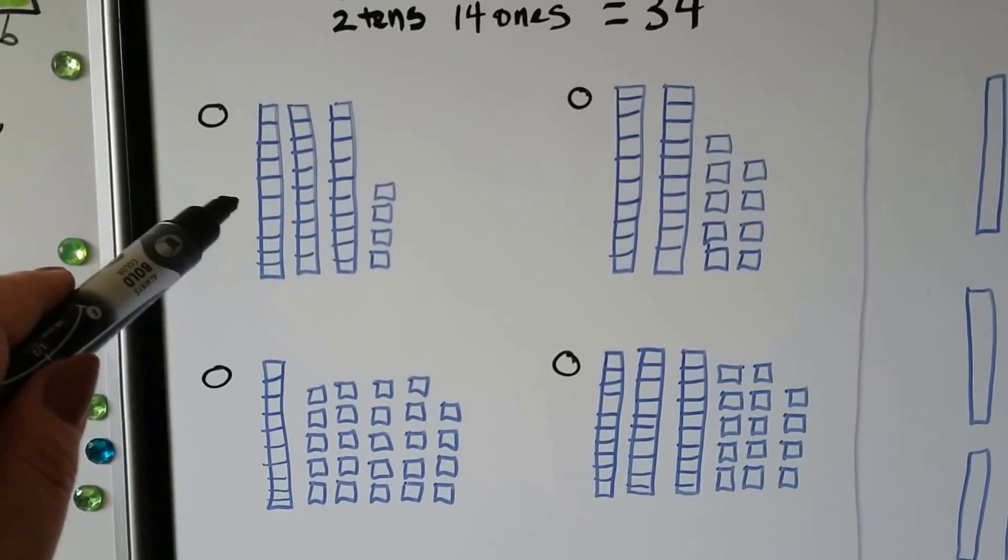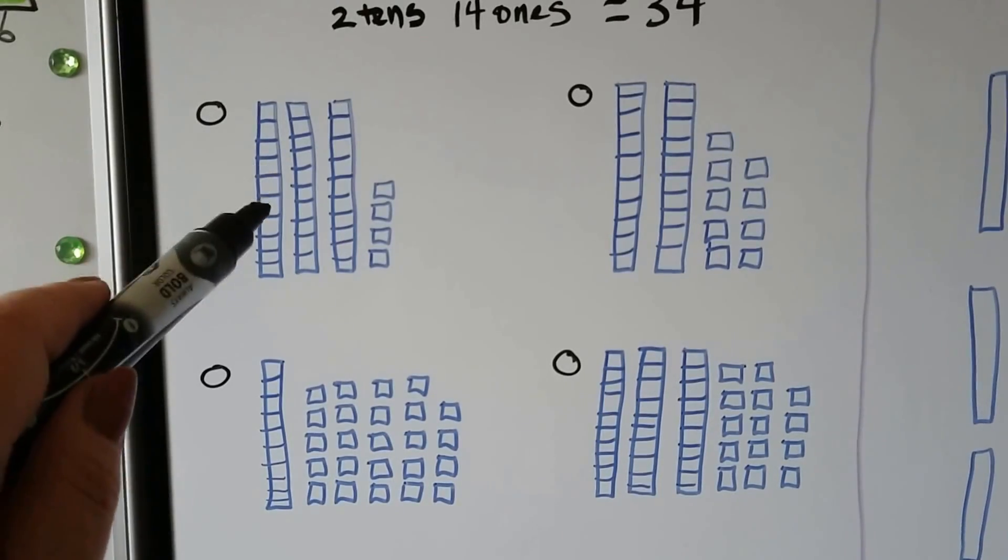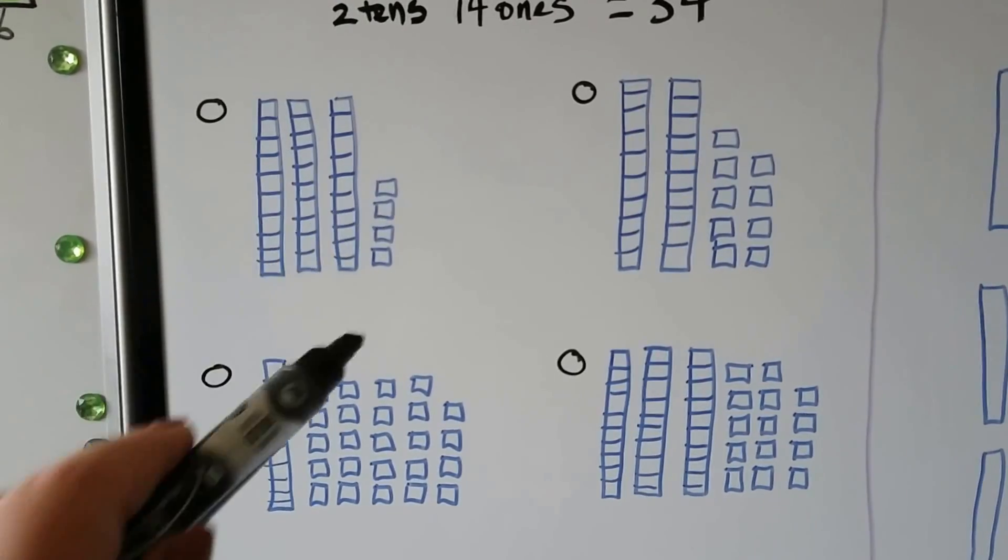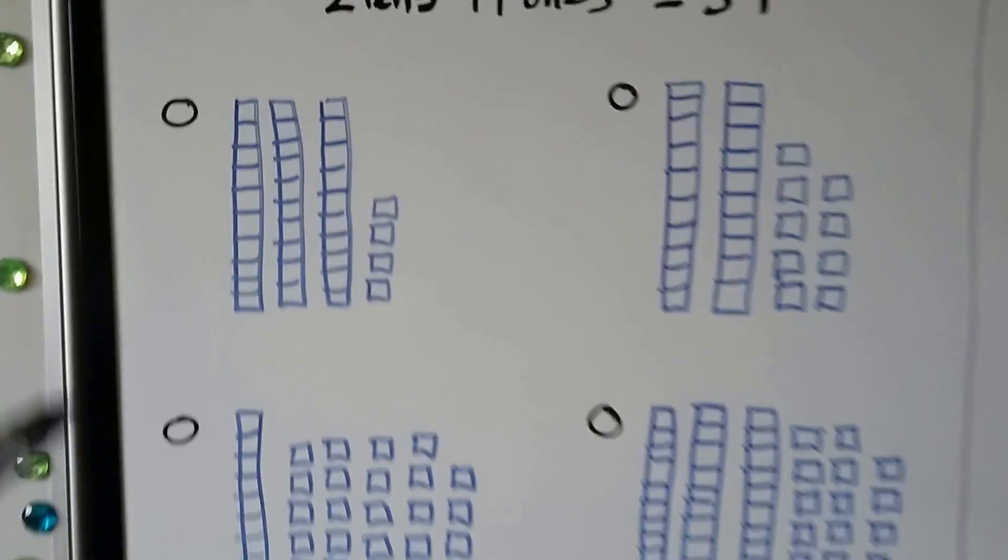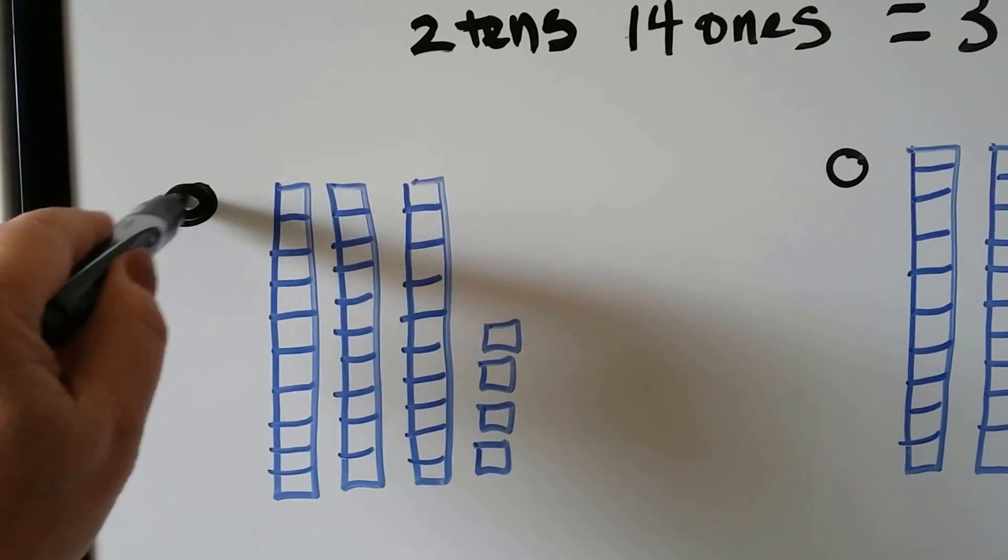So we need to find which one of these is the same as 34. Does this one show 34? It has one, two, three tens and four ones. Yeah. We can fill this in because it shows 34.